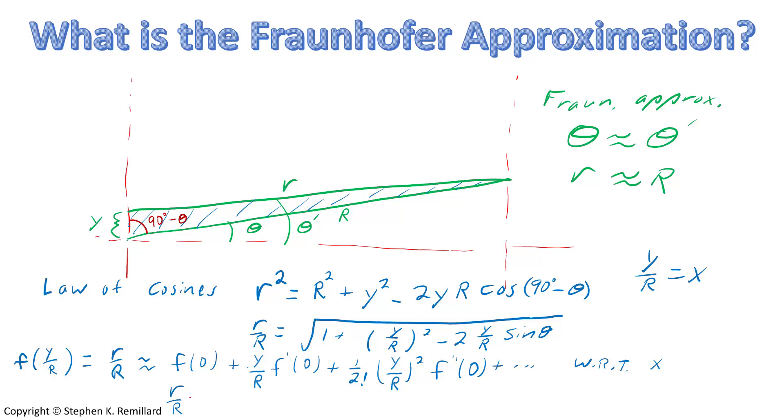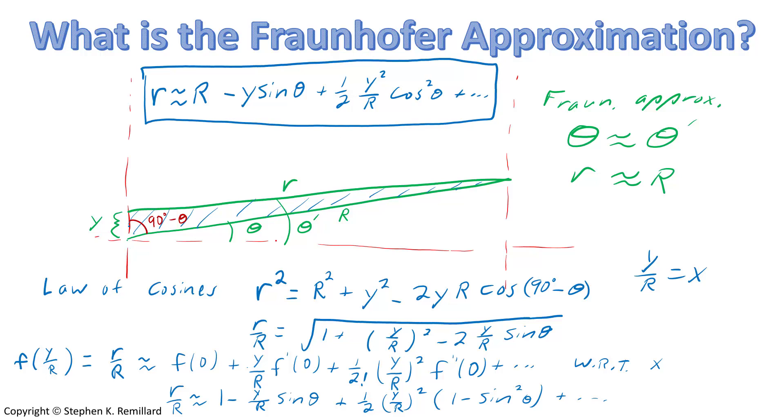To get r divided by R is approximately 1 minus y over R sine theta, where the approximation is when you cut off higher order terms. I like to write this in terms of r by itself, so bringing the big R over to the right hand side. And we have an approximation for this distance, little r, in terms of big R and theta and y.